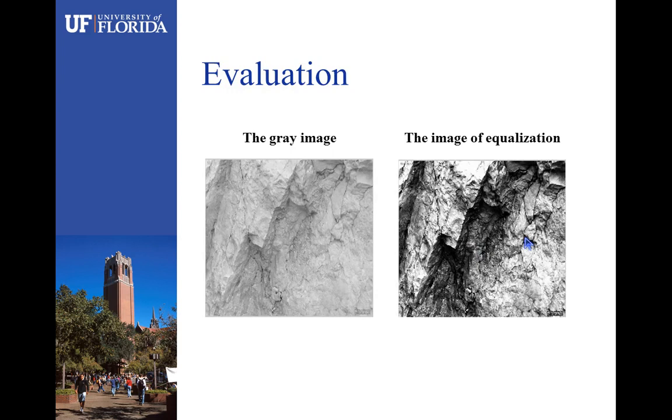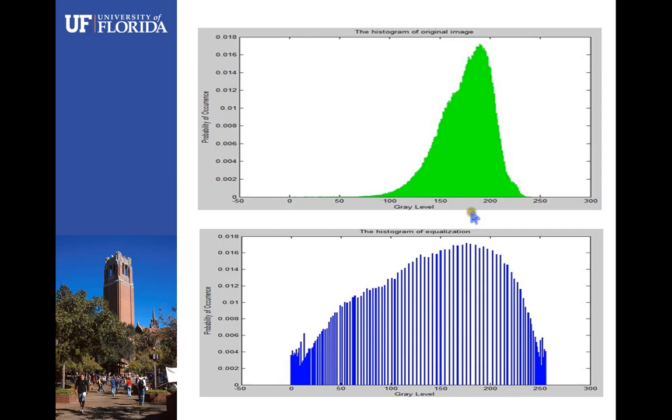Now, these are the gray image and the image of equalization, and these are the histogram of the original image and the histogram of equalization.